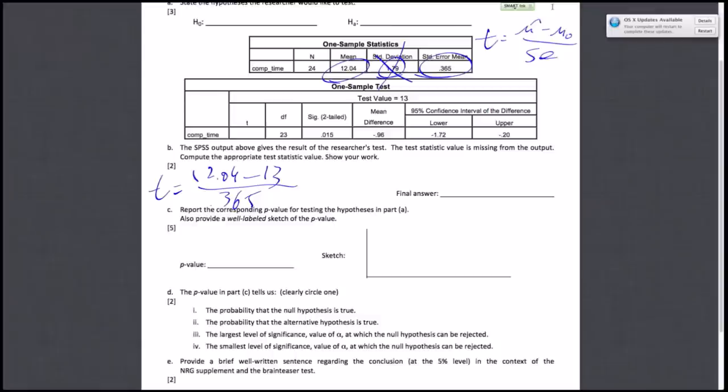Once you get the t-statistic equation set up, do the math and plug it into a calculator. You'll find this is negative 0.96 over 0.365, which equals negative 2.63. That's the final answer for part B.